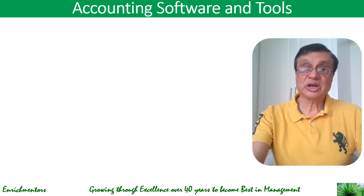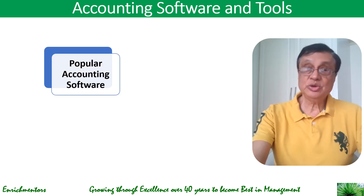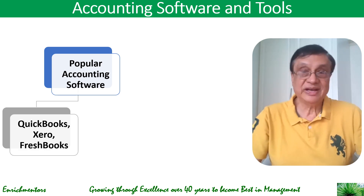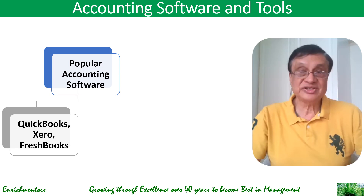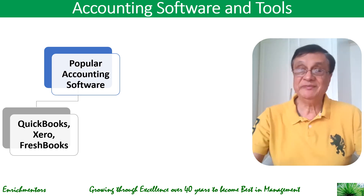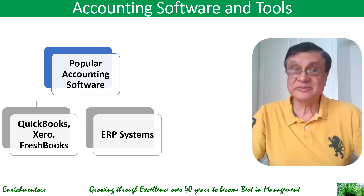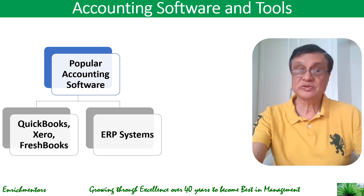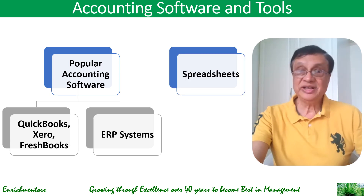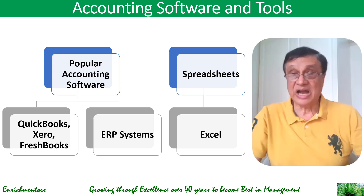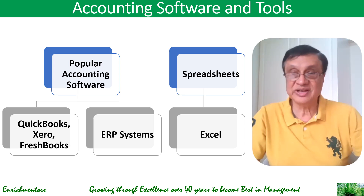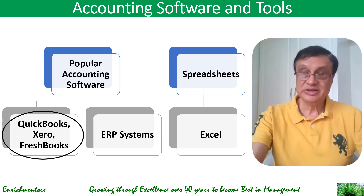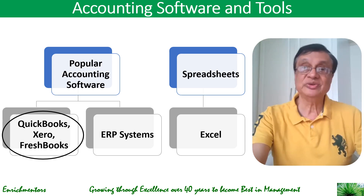So what are the accounting softwares and tools that you can use? We will talk about three in this course: QuickBooks in this lecture, then Xero, and then FreshBooks. There are also ERP systems for larger companies — enterprise resource planning systems like SAP and Oracle — whereas QuickBooks, Xero, and FreshBooks are useful for small and medium-sized businesses. And then there are spreadsheets like Excel, which are widely used for financial modeling, analysis, and record keeping.